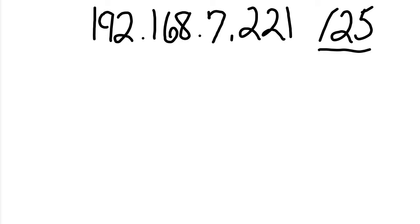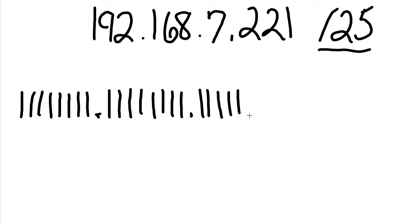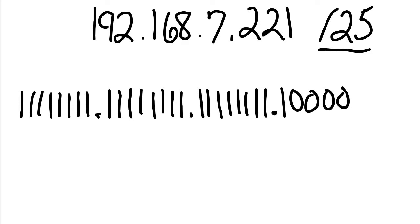Counting out the 25 ones: 1, 2, 3, 4, 5, 6, 7, 8, 9, 10, 11, 12, 13, 14, 15, 16, 17, 18, 19, 20, 21, 22, 23, 24, 25. Then we fill out the rest of the octet with zeros for positions 26 through 32, giving us the full 32-bit subnet mask in binary.